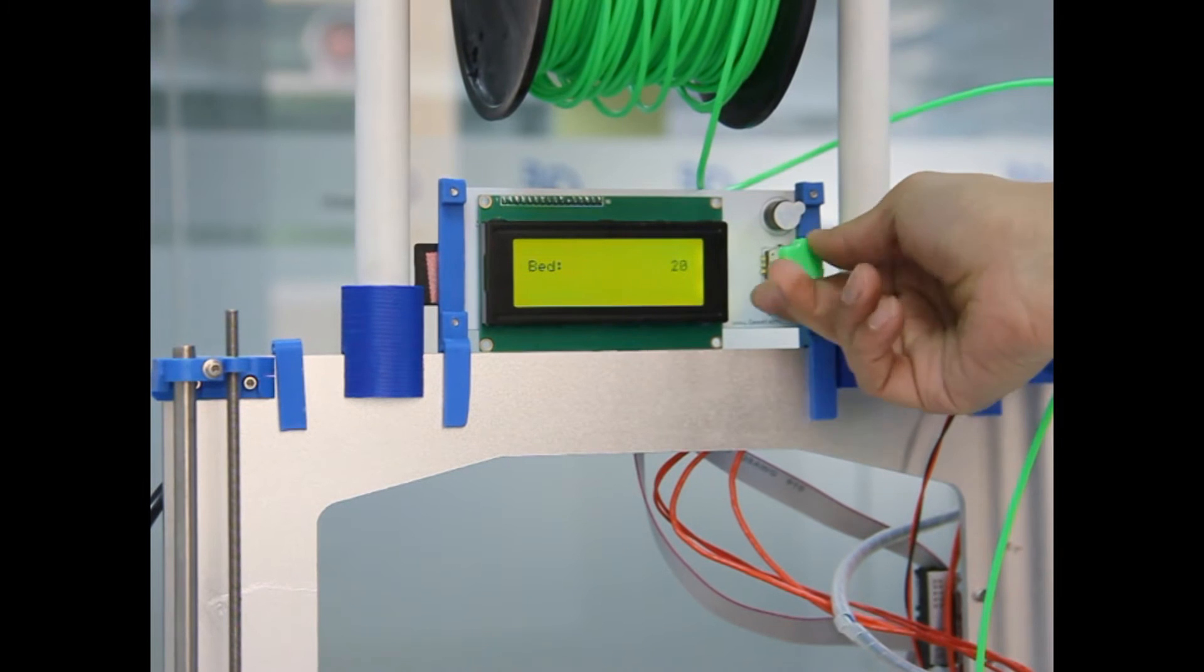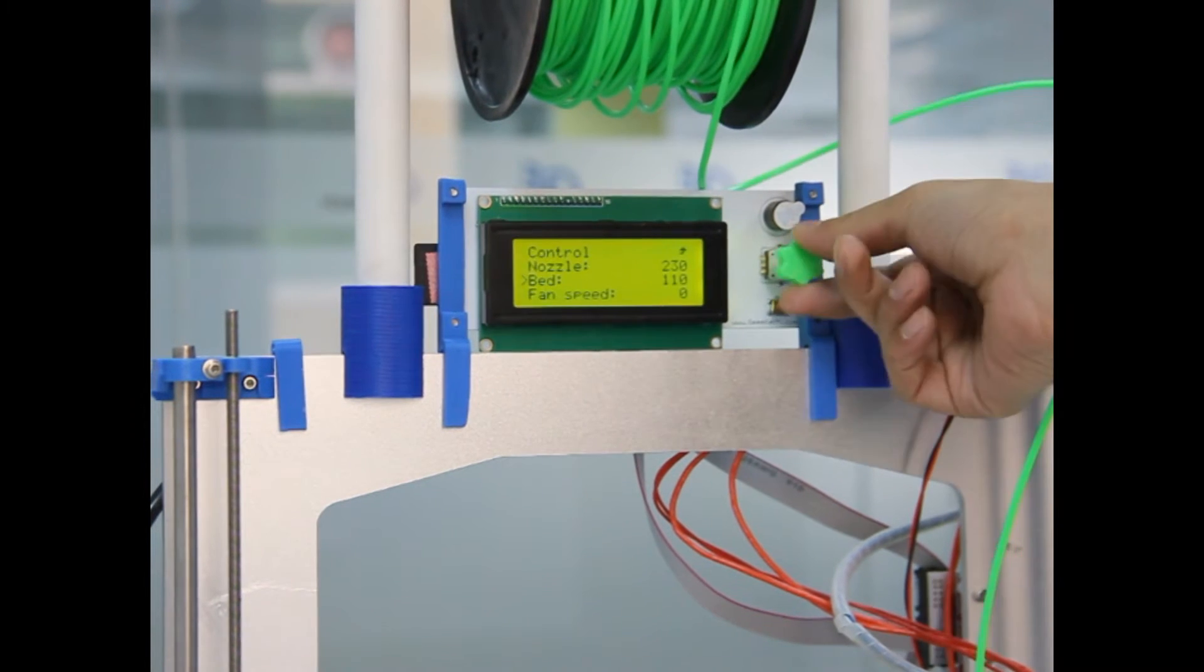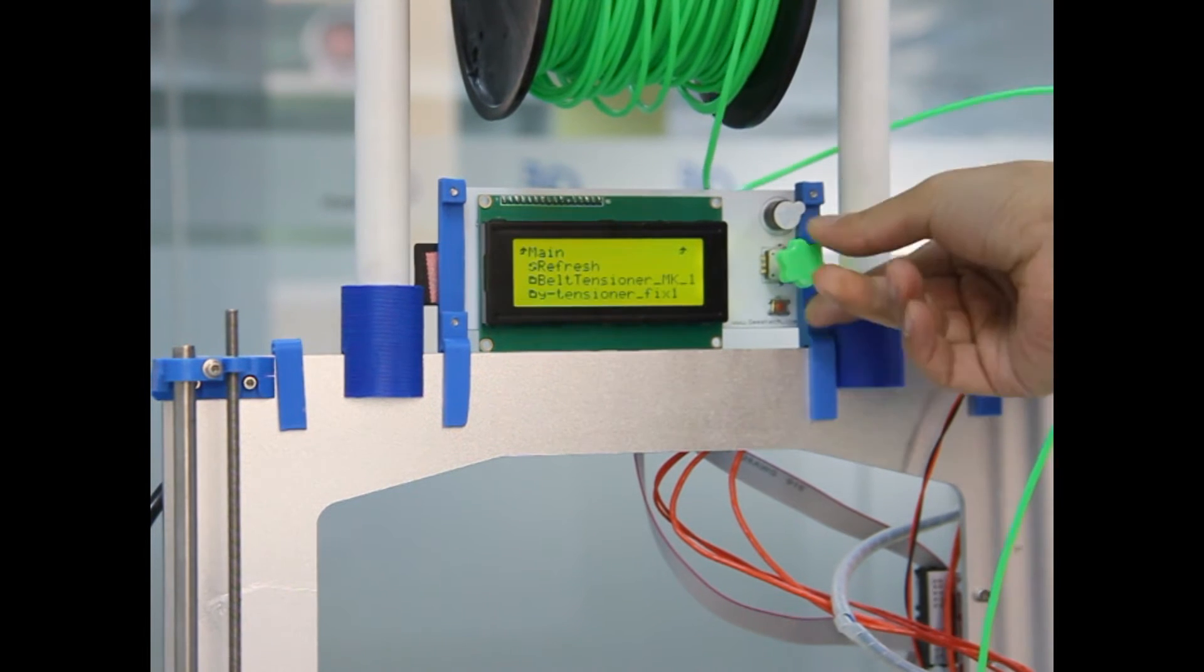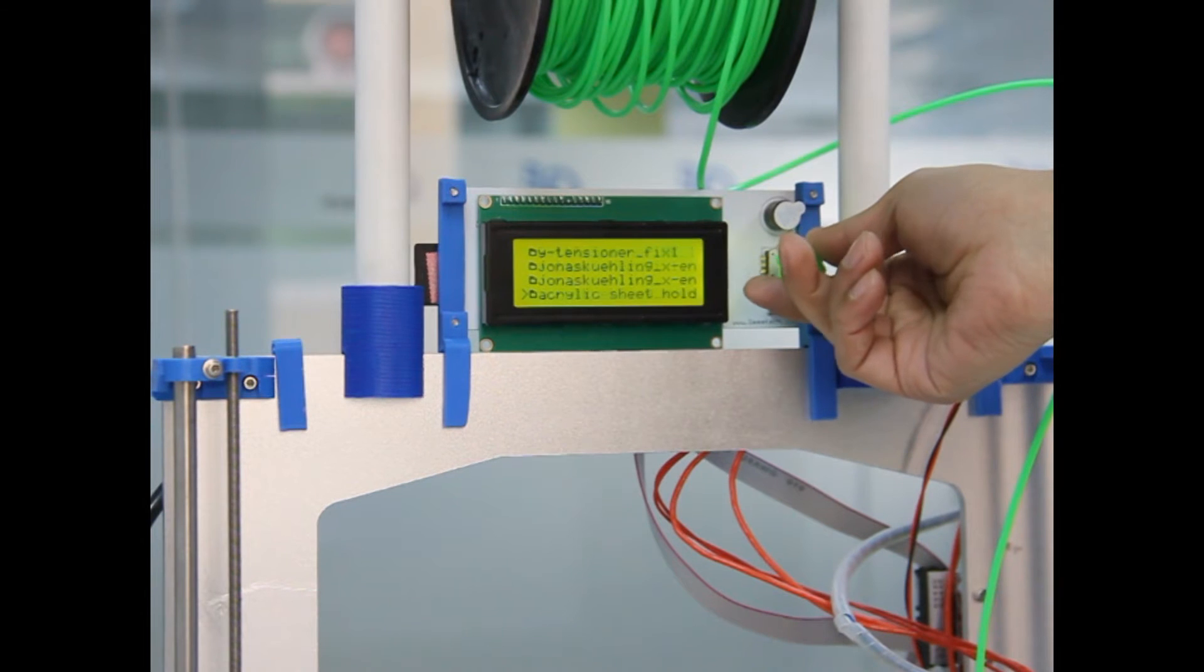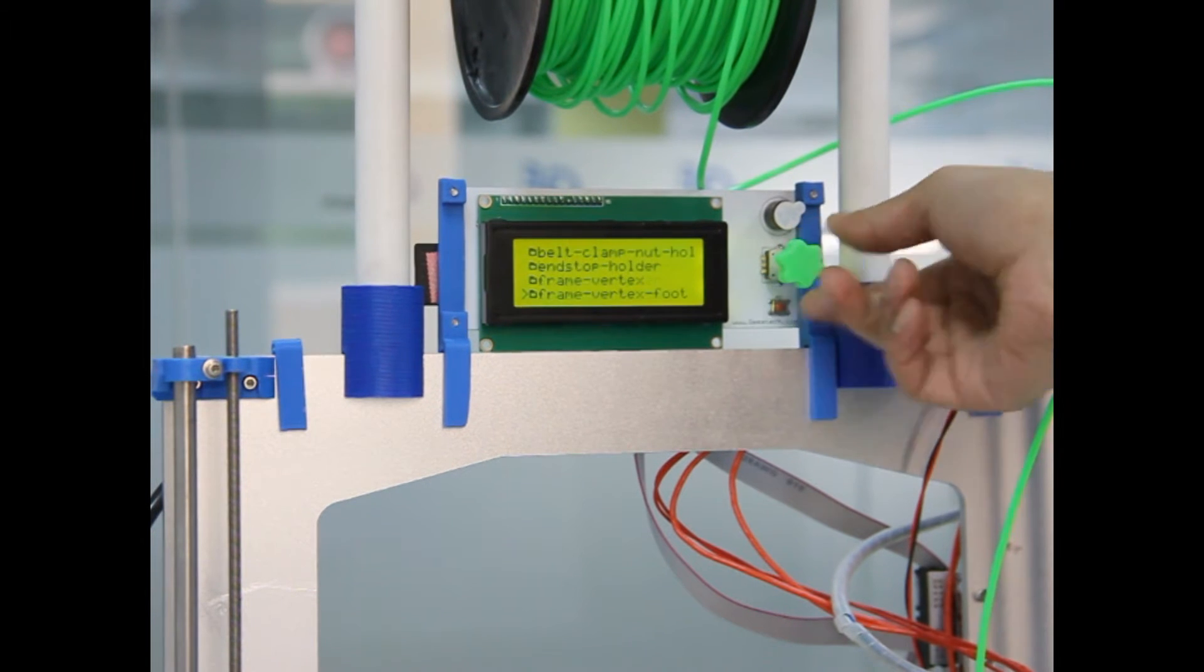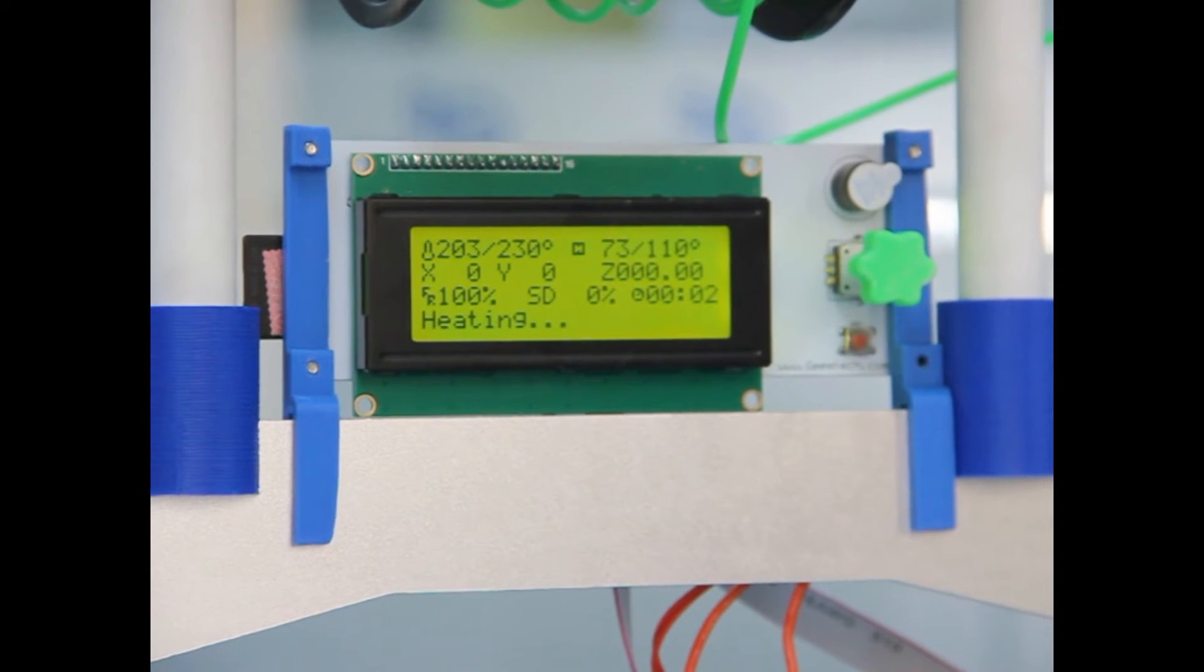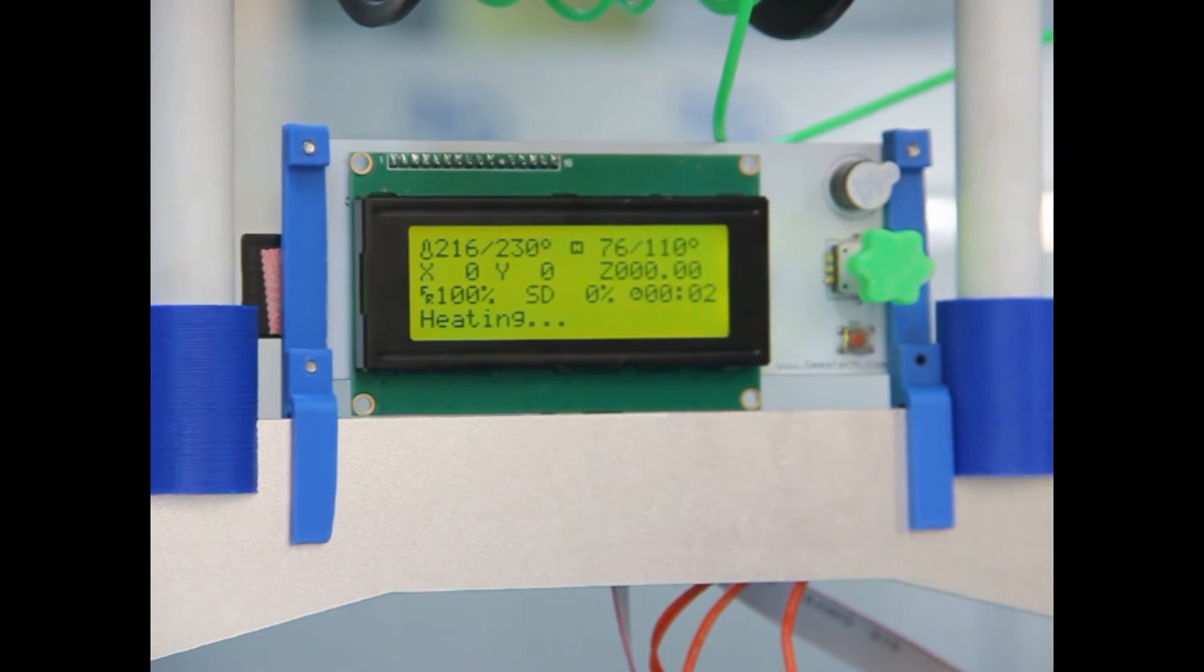ABS or PLA plastic will display different temperatures. For ABS, the hot end increases to 230, and PLA increases from 160 to 220. The heat bed increases to 110 degrees Celsius. That means ready to preheat ABS or PLA plastic.